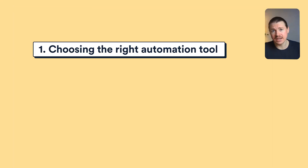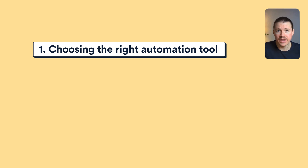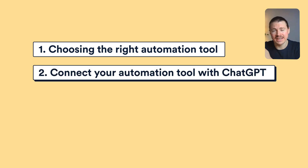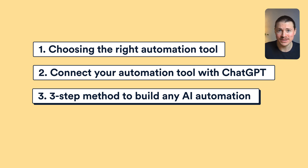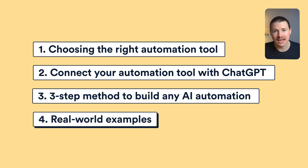Here's what you'll learn: first, we'll look at choosing the right automation tool. Then we'll show you how to connect your automation tool with ChatGPT. I'm then going to share our simple three-step method to build any AI automation. And lastly, we'll take a look at some real-world examples that you can apply today.